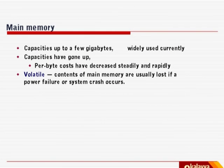To recapitulate: per-byte costs have decreased steadily, but contents remain volatile—main memory contents are lost if a power failure or system crash occurs. If memory access is of the order of tens or hundreds of nanoseconds, and you are building B-trees or B+ trees in memory, reaching a particular data pointer might require four, five, or six accesses at memory speed—all at least a thousand times faster than any disk access. So in-memory databases offer dramatically better performance.